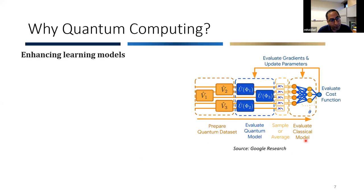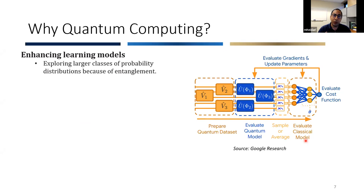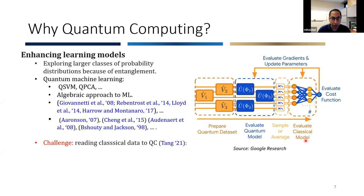The third line of advantage is enhancing learning models. This is due to resources such as entanglement, using which quantum computers can explore larger classes of probability distributions and therefore enhance learning models. Currently, there are challenges in this approach — notably, it is typically very hard to read classical data into a quantum computer, and some prior works require that the data has already been input to the quantum computer.